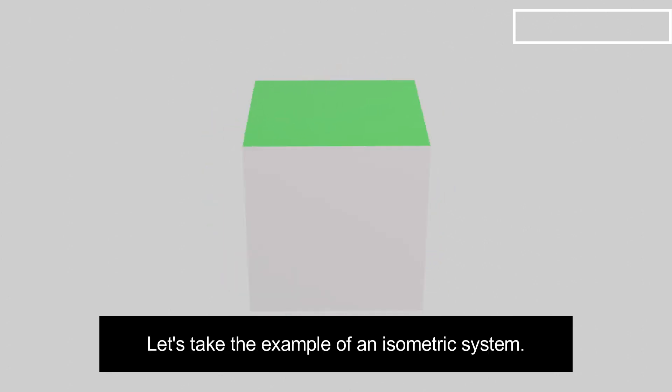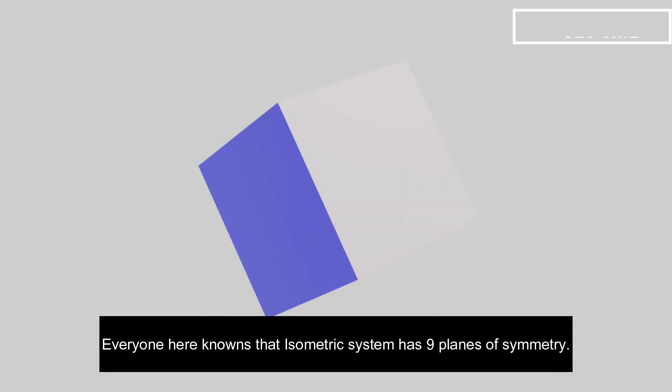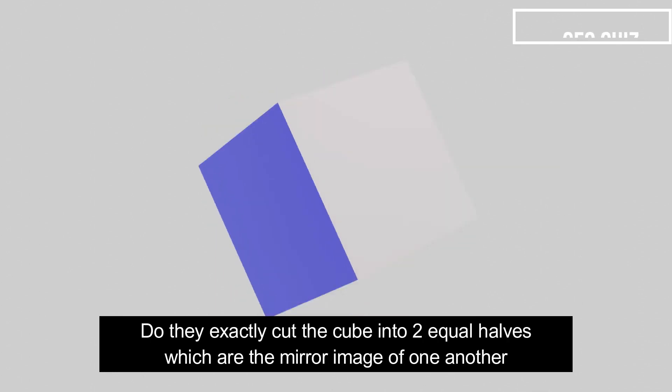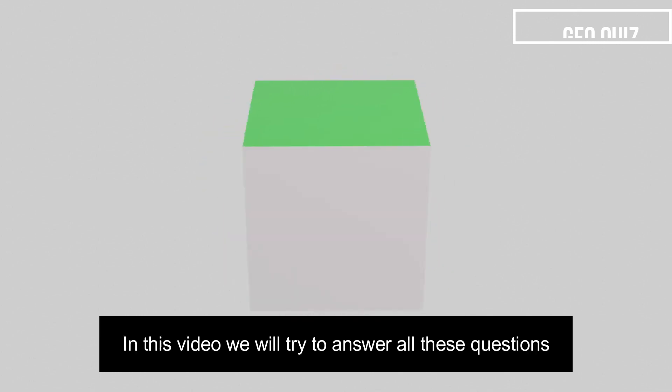Let's take an example of an isometric system. So, everyone here knows that isometric system has 9 planes of symmetry. But what are the 9 planes? How do they look like? Do they exactly cut the cube into 2 exact halves which are the mirror image of one another?